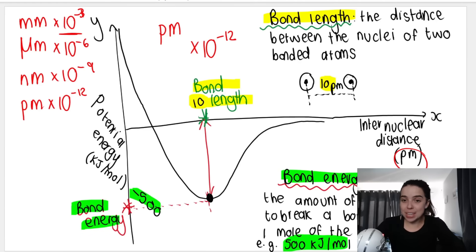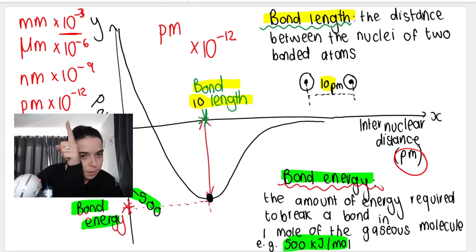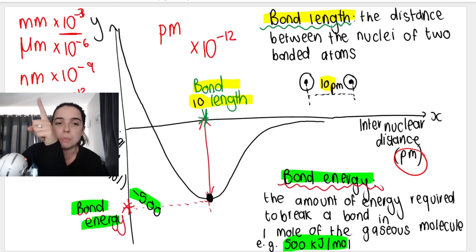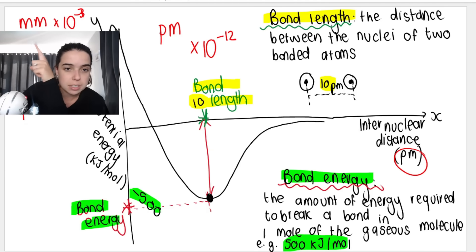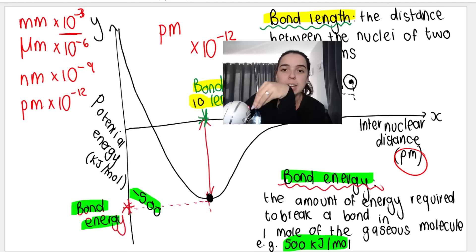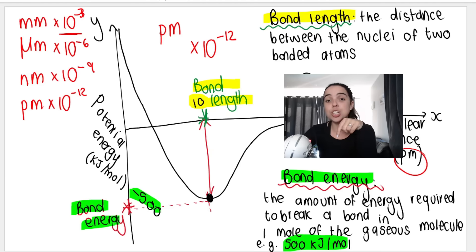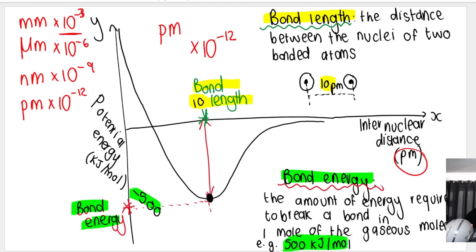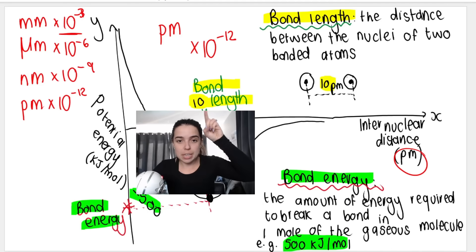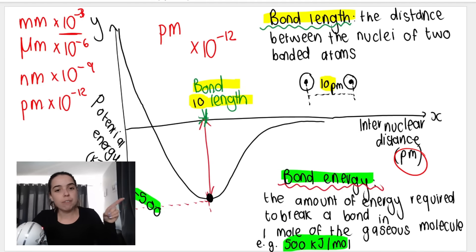Here's another picture illustrating the same thing, and I've reminded you of the conversions. Converting from picometers to meters: times 10 to the negative 12. Nanometers to meters: times 10 to the negative 9. Micrometers to meters: times 10 to the negative 6. Millimeters to meters: times 10 to the negative 3. Bond length is the distance between the nuclei of two bonded atoms. Bond energy is the amount of energy required to break a bond in one mole of the gaseous molecule. In this example, the bond length is 10 picometers and the bond energy is negative 500 kilojoules per mole.